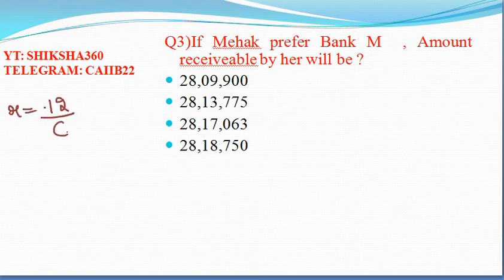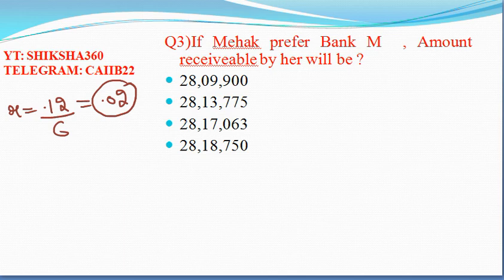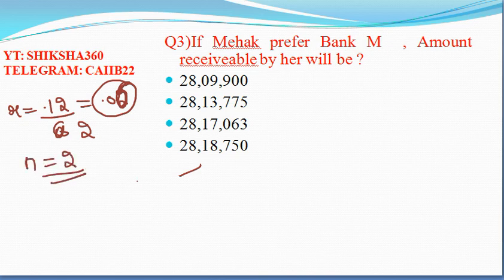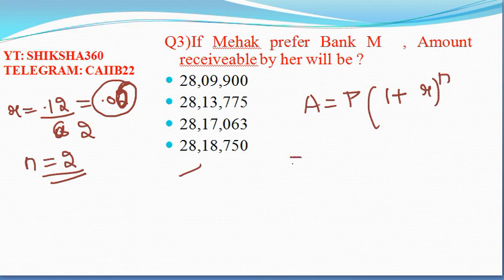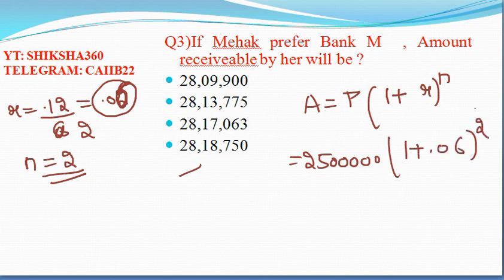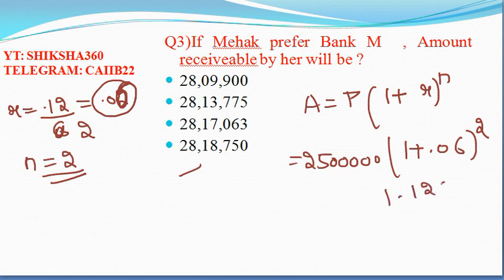For Bank M with half-yearly compounding: R = 0.12 divided by 2 = 0.06, and N = 2. So A = 25 lakh × (1 + 0.06)^2 = 25 lakh × (1.06)^2 = 25 lakh × 1.1236. This comes out to 28,09,000. So if Mahek invests in Bank M, she will receive 28 lakh 9 thousand rupees.